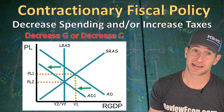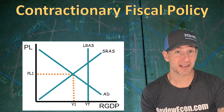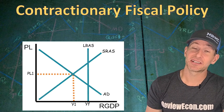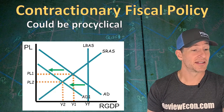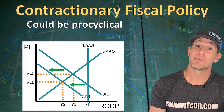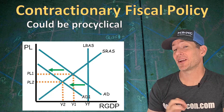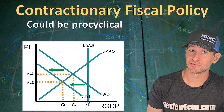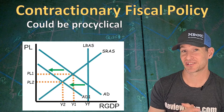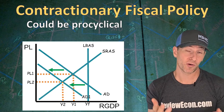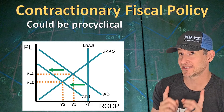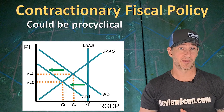If we currently have a recessionary gap and the government uses contractionary fiscal policy, that action is going to be pro-cyclical — it will still shift the aggregate demand curve to the left and make our recessionary gap bigger, leading to very high levels of unemployment. So on your exam, remember that it is possible for the government to take action that makes the recessionary or inflationary gap bigger, and that fiscal policy action is not necessarily returning us to long-run equilibrium.